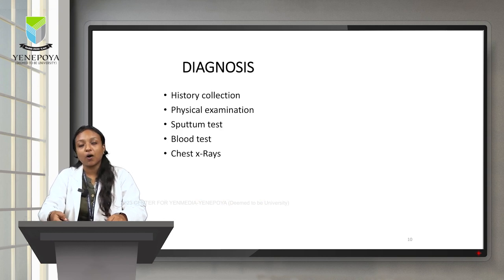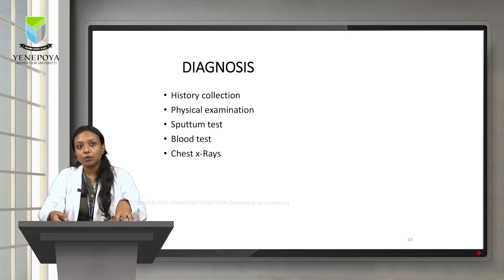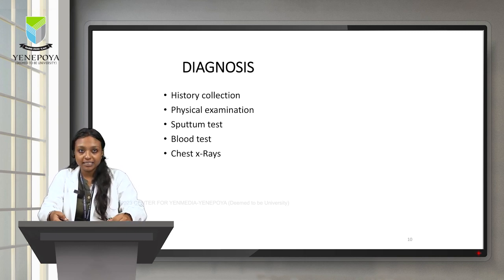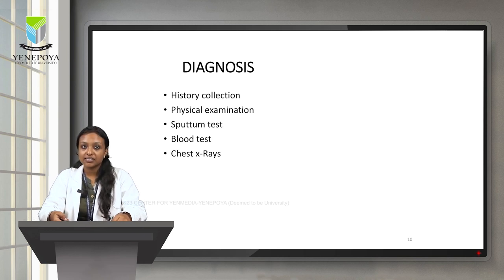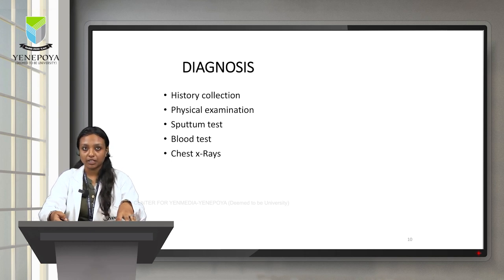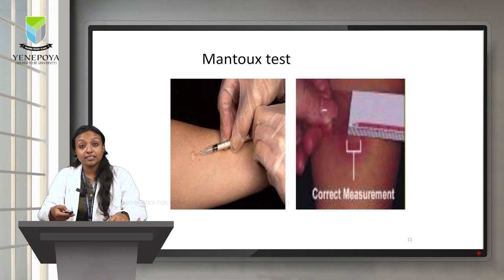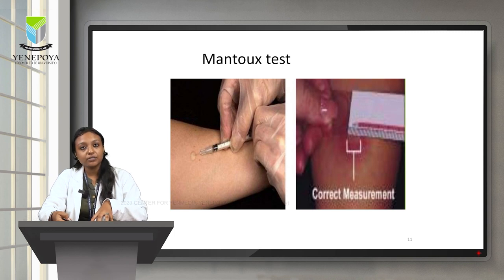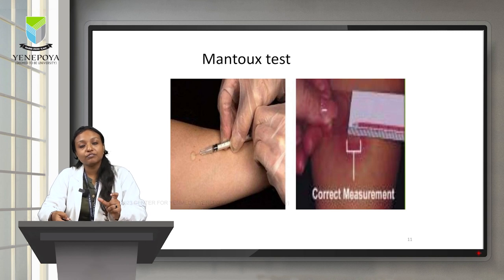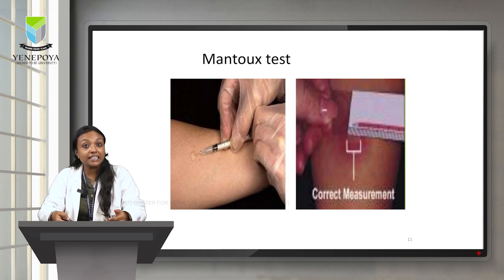Diagnosis or investigation — how to investigate the presence of bacteria in the human body. Methods include history collection, physical examination, sputum test, blood test, and chest X-ray. Another significant test used for pulmonary TB is the Mantoux test. A small amount of tuberculin is injected under the arm of the patient to detect the presence of bacteria in the body.